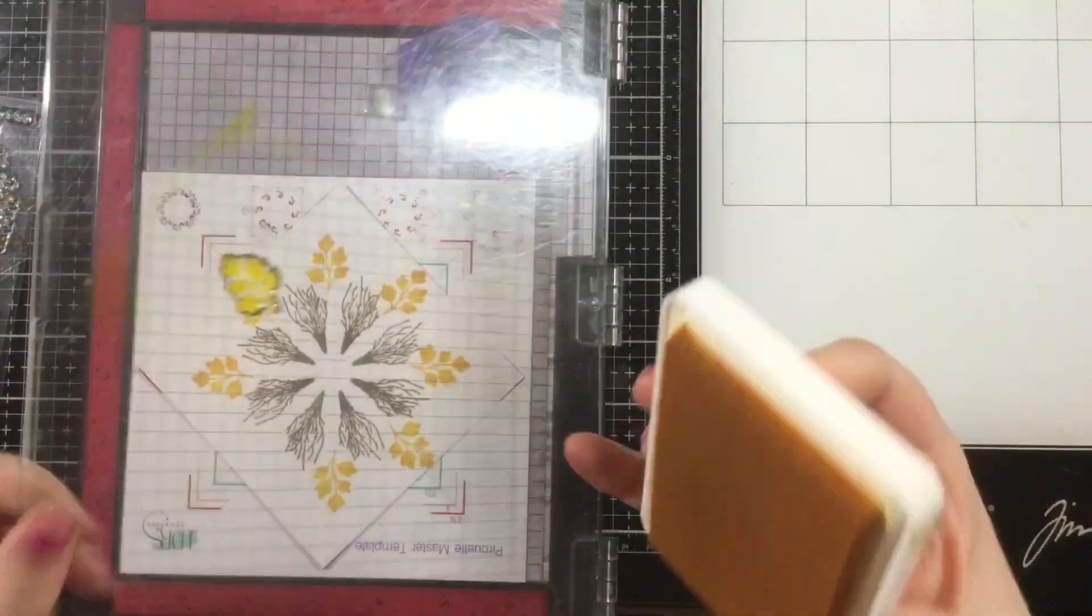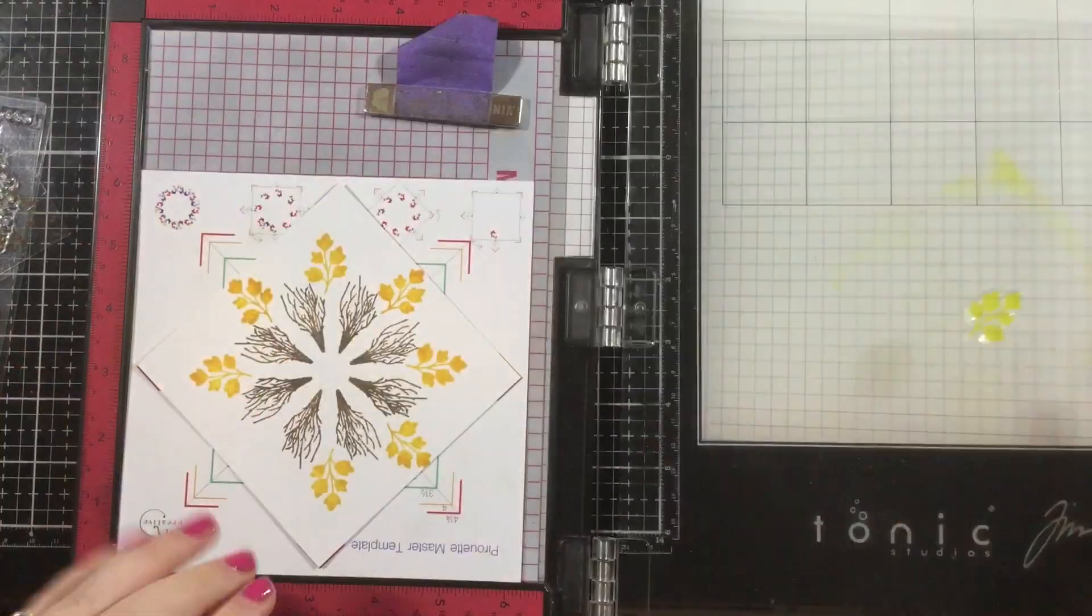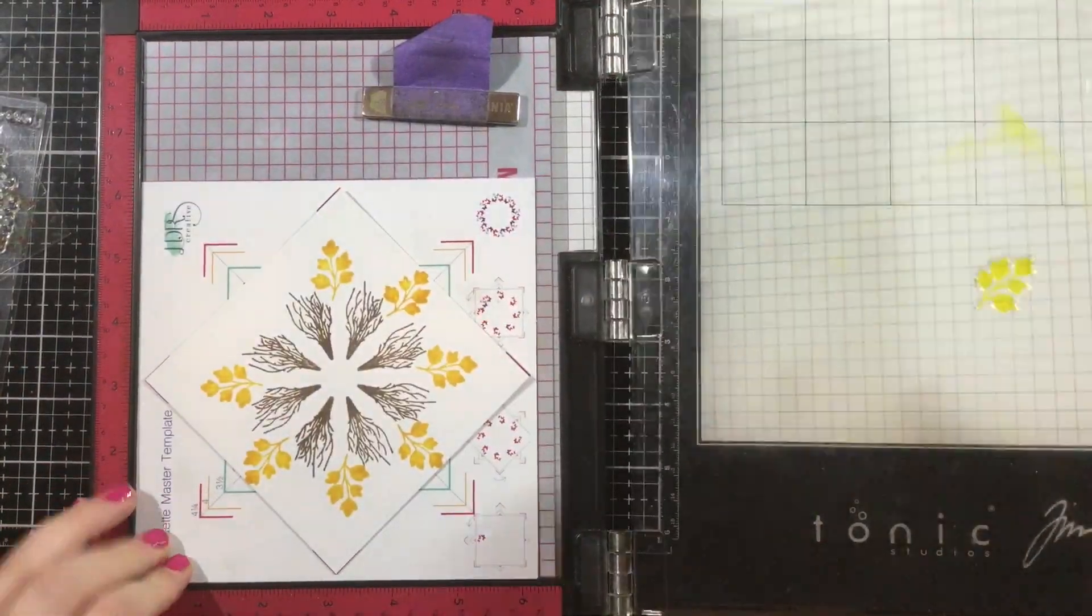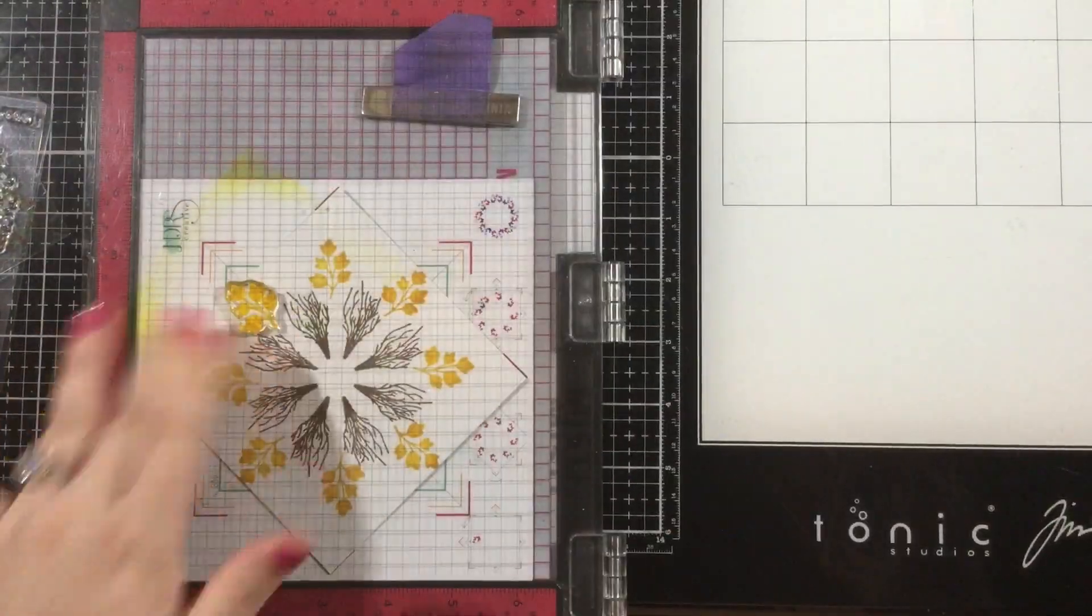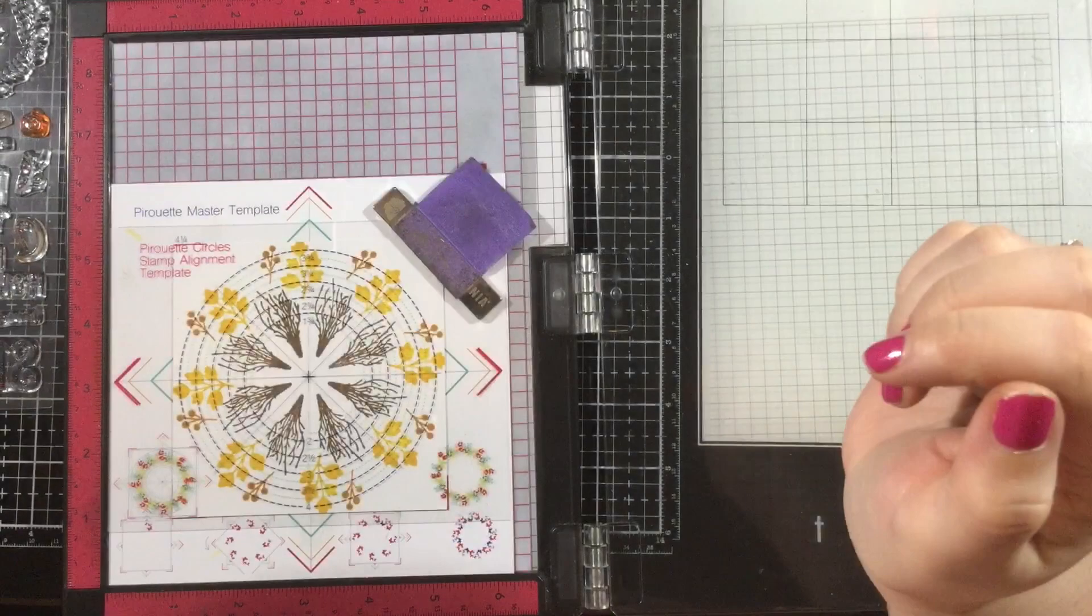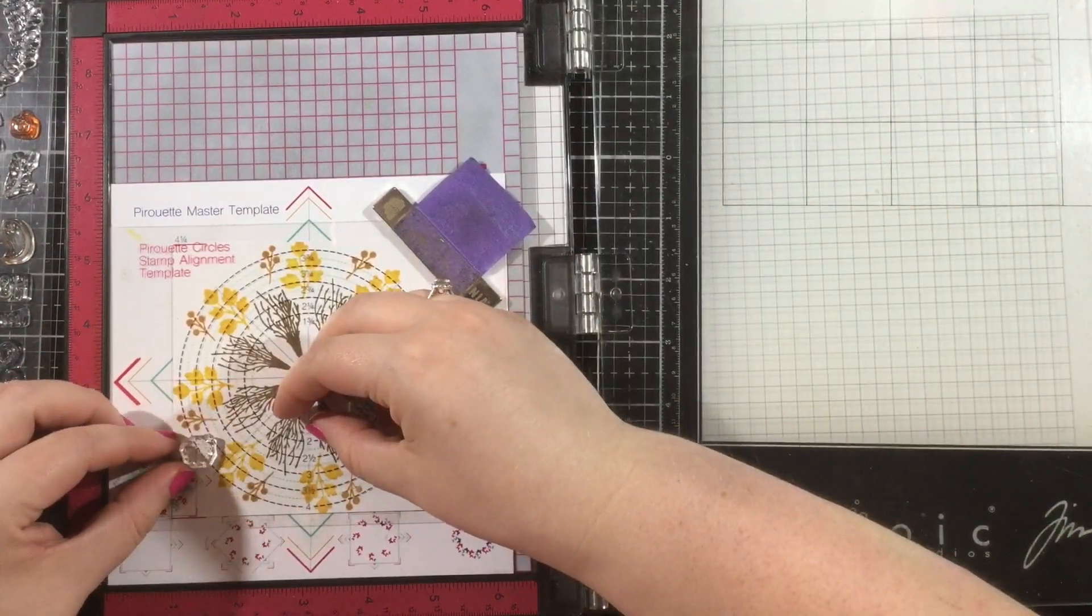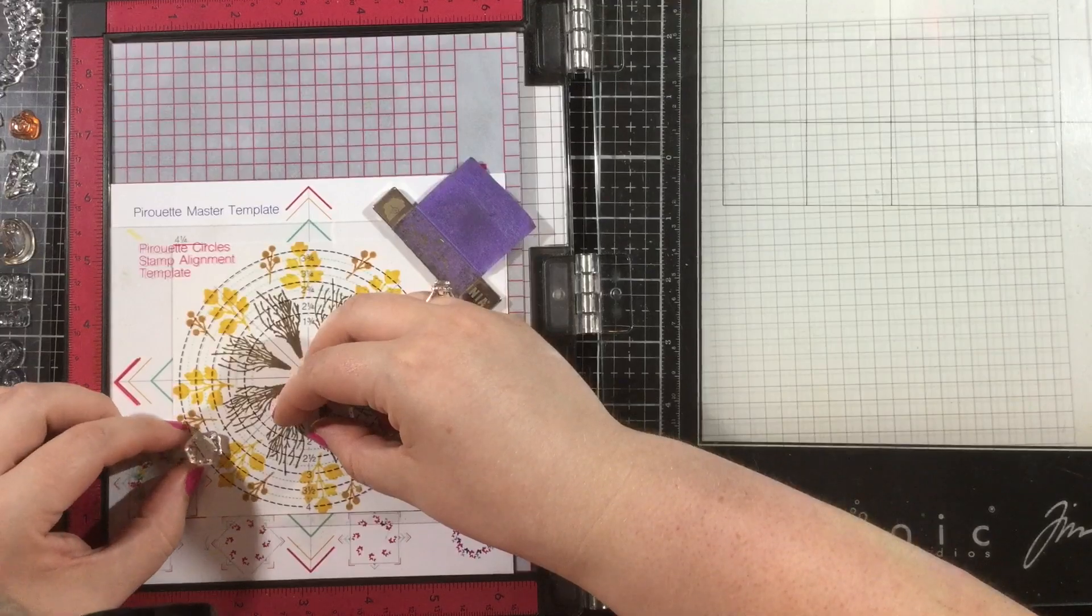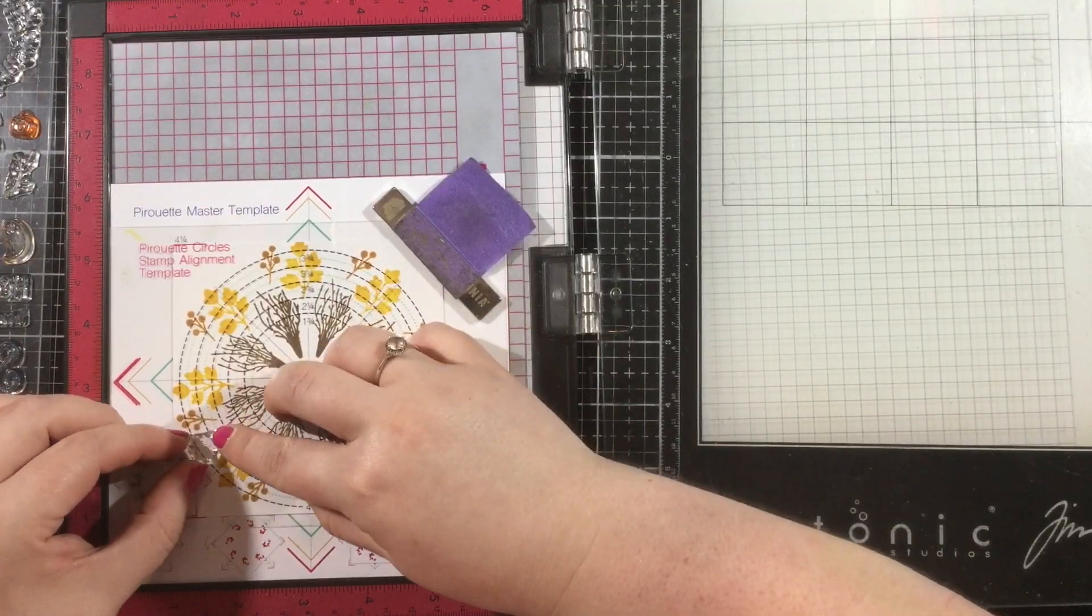I will show you this again just so that you can understand what I do. You can absolutely use the pirouette pattern templates the way they're intended to be used and just adhere your cardstock on there and then kind of pick it up and turn it each time, but I find that this saves me a lot of time.